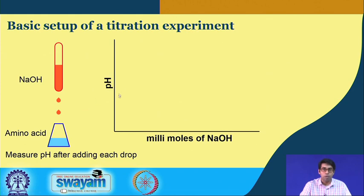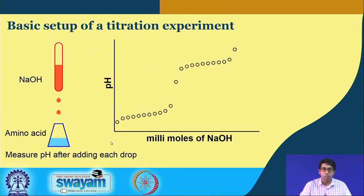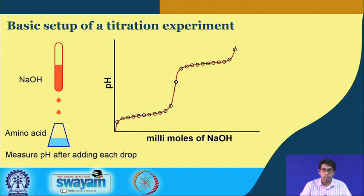This can be very nicely plotted in a graph. The x-axis is the amount of sodium hydroxide that is added, written here in terms of millimoles of sodium hydroxide, and on the y-axis we plot the pH measured at each titration point. Each of these points are the titration points, and what you will see is that during titration the pH was initially increasing in a linear fashion, and suddenly here the pH jumps — it increases a lot by just addition of 1 or 2 drops, and then again it stabilizes and increases linearly till we reach the end of the titration. We can join these points and get a nice titration curve.